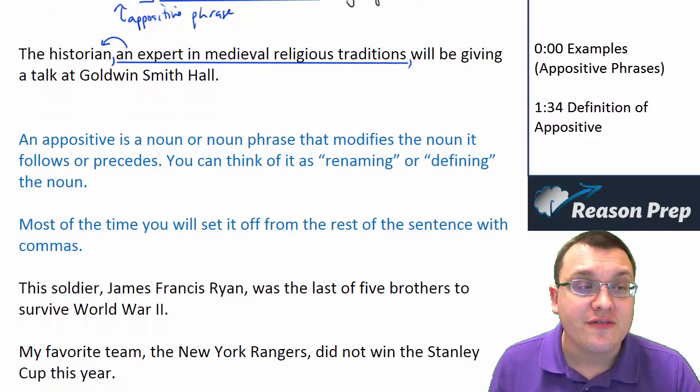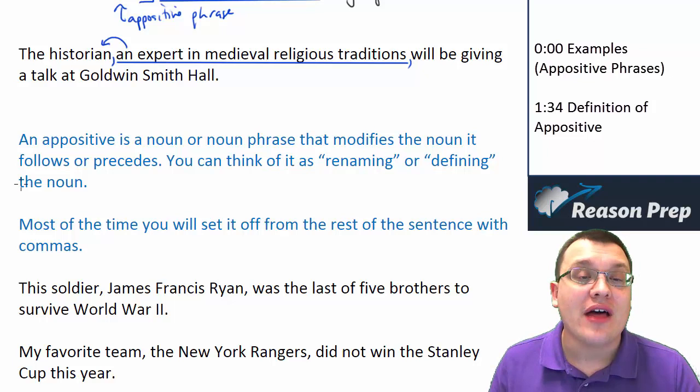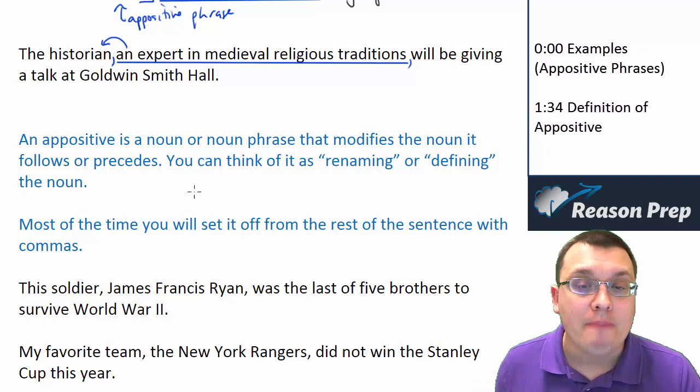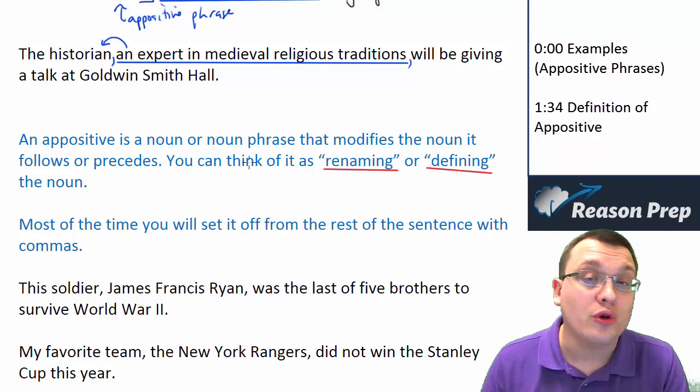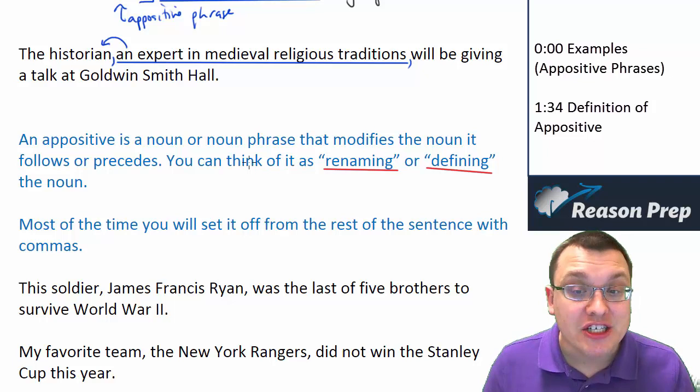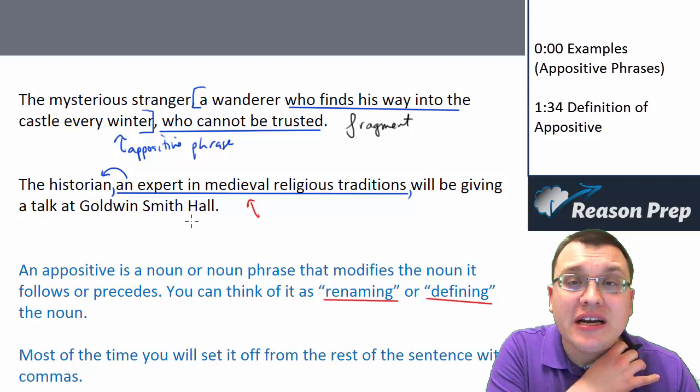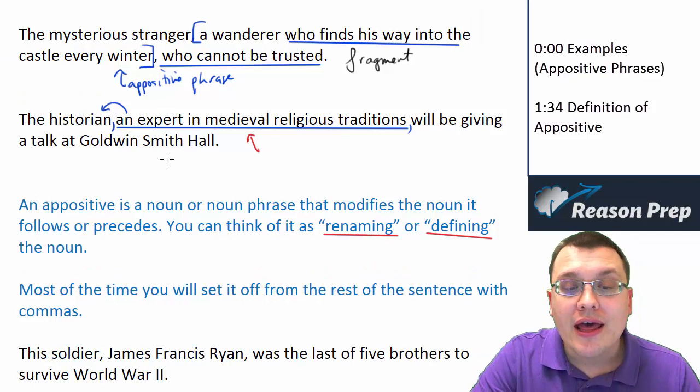So what is an appositive? An appositive is a noun or a noun phrase that modifies the noun that it follows, or sometimes precedes, though typically your appositive phrase comes after the noun. You can think of it as renaming or defining the noun. If you recall that skeletal fluorosis example from a previous video, that was an appositive phrase acting as a kind of definition. In this example, it's giving us more information about this historian and his or her background — and that's what an appositive phrase does.